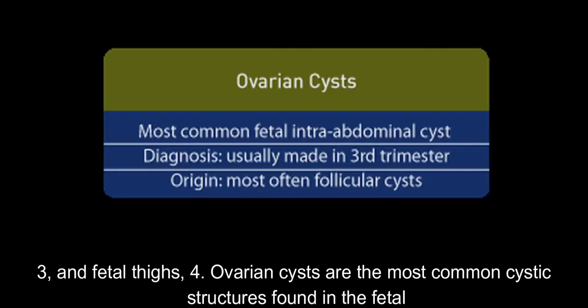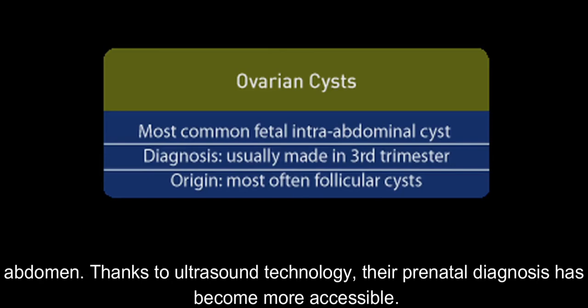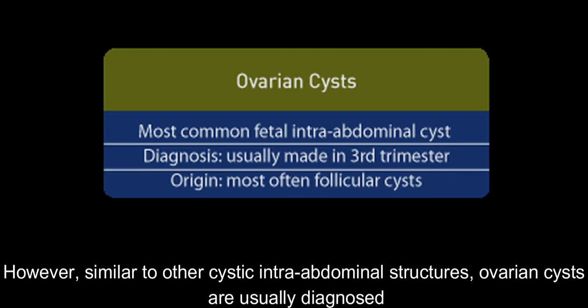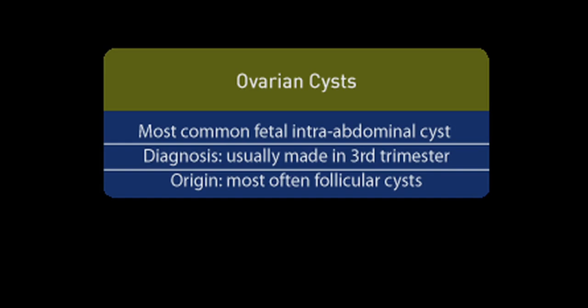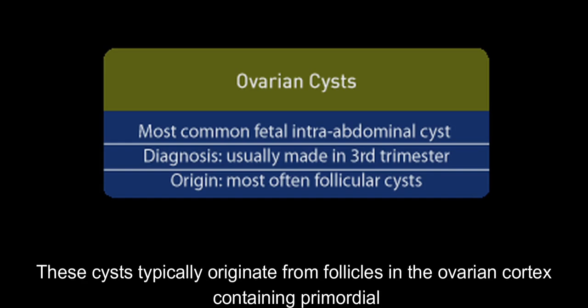Ovarian cysts are the most common cystic structures found in the fetal abdomen. Thanks to ultrasound technology, their prenatal diagnosis has become more accessible. However, similar to other cystic intra-abdominal structures, ovarian cysts are usually diagnosed in the third trimester, with a median gestational age of 35 weeks and a range of 26 to 40 weeks. These cysts typically originate from follicles in the ovarian cortex, containing primordial follicles.